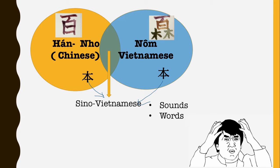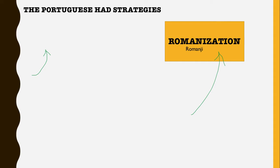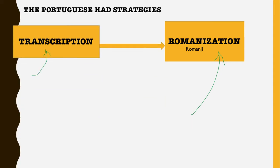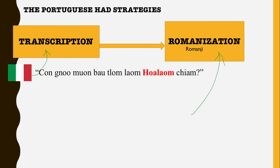The Society of Jesus had already developed romanization efforts in Japan and China, trying to romanize local languages such as Chinese and Japanese, and they brought that idea to Vietnam. But before that, they would do some testing of the waters — what I would call a transcription phase. In the group of Jesuits, there were Italian and Portuguese missionaries, and we have the Italian transcription as the first ever written attempt.